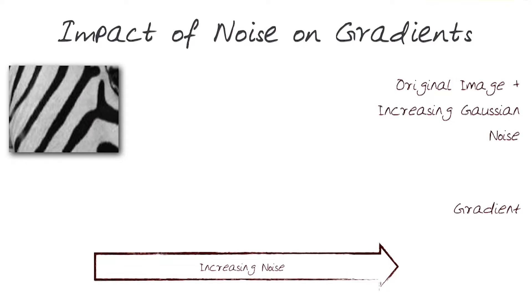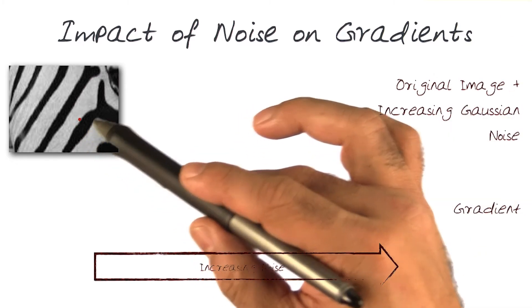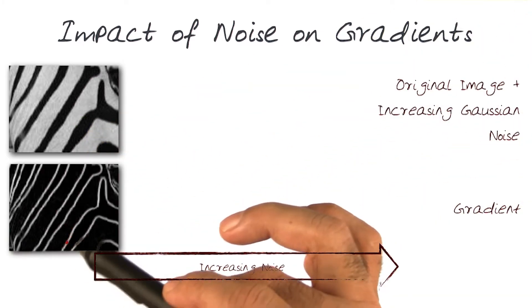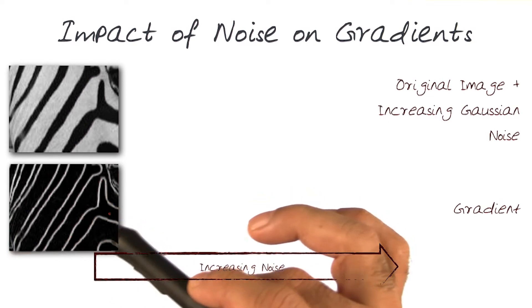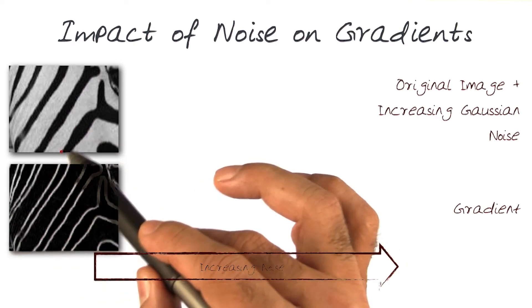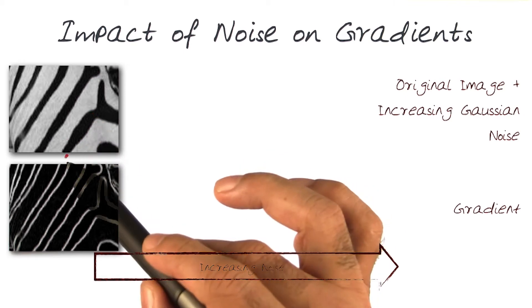Of course, it would be unfair of me to just show and leave this topic of noise without looking at images with noise. Take my example of the zebra image here. If I was to compute the gradient of the zebra image, I would get something like this — really well-defined ridges, as we have looked at before. Something that lets me figure out exactly the details I need.